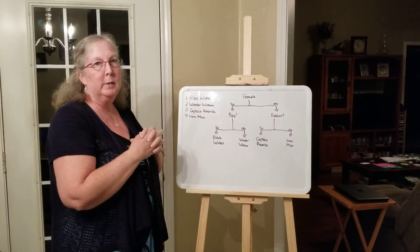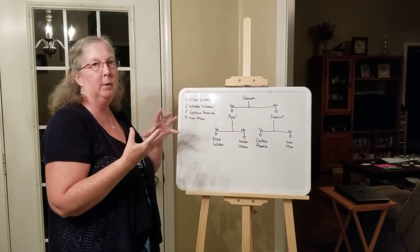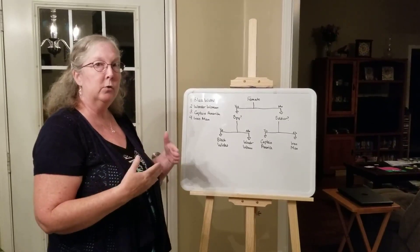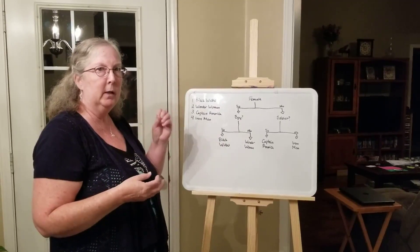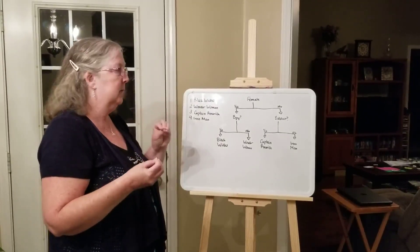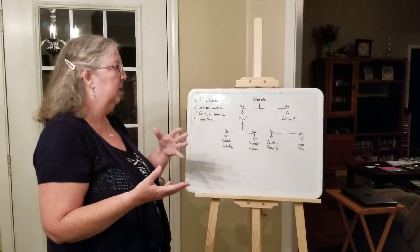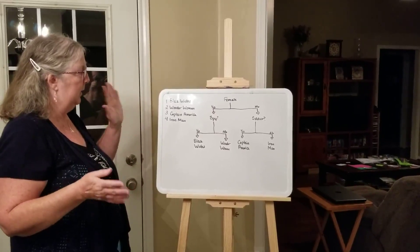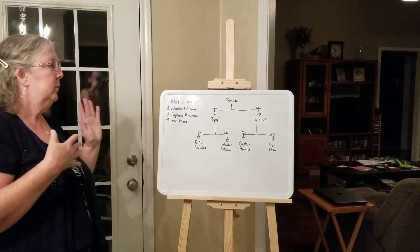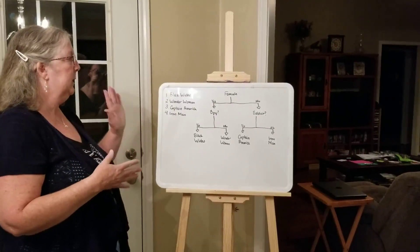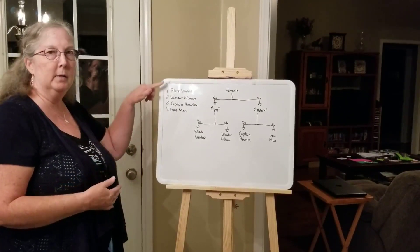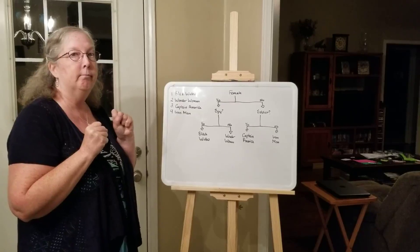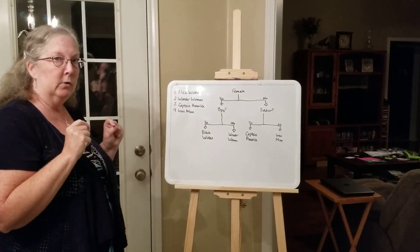Starting off on how to do a dichotomous key — I wanted to make something fun to illustrate the idea. We're going to ask yes or no questions. It's kind of like a game you played as a kid: 20 questions, has to be yes or no. My daughter made this example because my kids really like superheroes. You have four possibilities, and you have to decide which one by asking yes or no questions. The idea is to separate these individually out into separate groups.